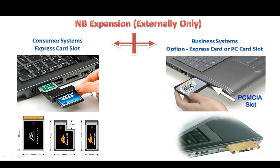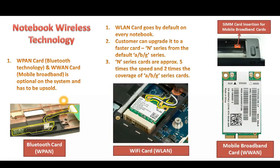Let's look at the internal Wi-Fi options and mini-card options for Bluetooth, Wi-Fi cards, and mobile broadband cards. The wireless PAN card — Bluetooth technology — and the wireless WAN card — mobile broadband — are optional on the system and have to be upsold. This is how a Bluetooth card sits and connects internally to a notebook. If there is no internal option and the customer wants Bluetooth, you can give them external USB Bluetooth dongles or Bluetooth cards that go into the express card slot.